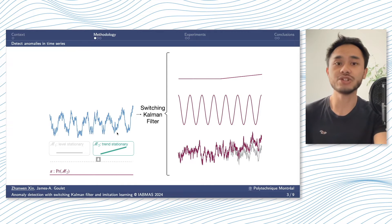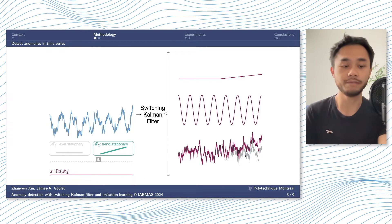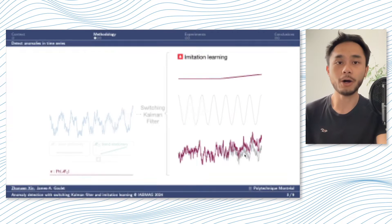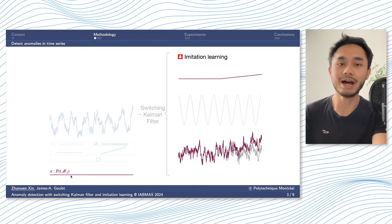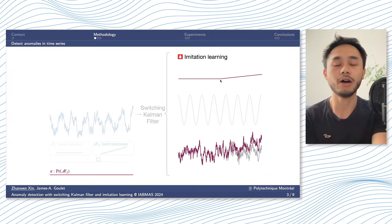However, the changes will still go to the hidden states estimation, for example, the baseline here, as well as the residual here. So here we propose to use imitation learning on top of switching Kalman filter that not only relies on the probability of region switch to trigger an alarm, but also the changes of pattern in our baseline and the residual term.